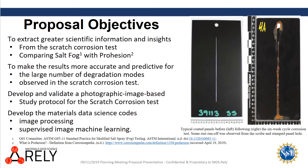The objectives of this project are to extract greater scientific information and insights from the scratch corrosion test. We'll compare the salt fog and prohesion tests and make the results more accurate and predictive for the large number of degradation modes that are observed in the scratch corrosion test.